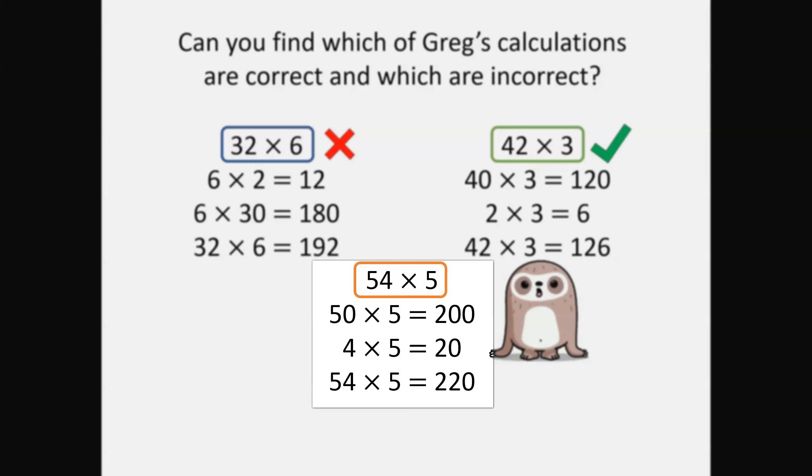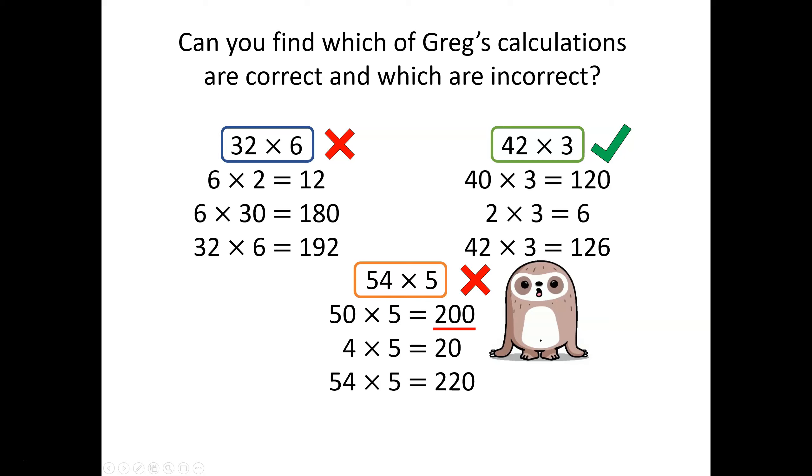What about the final example? Here, Greg has partitioned fifty-four correctly into fifty and four. But did you notice his calculation error? We know that five multiplied by five is twenty-five, so five multiplied by fifty is two hundred and fifty, not two hundred. Let's fix it.